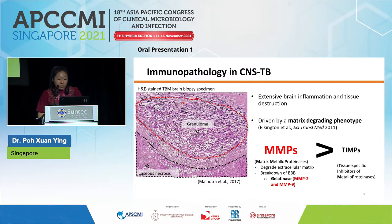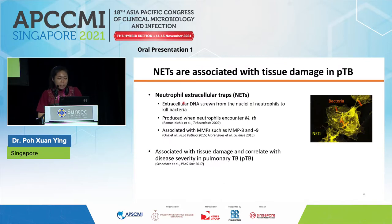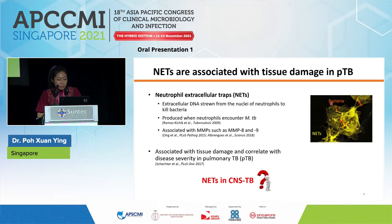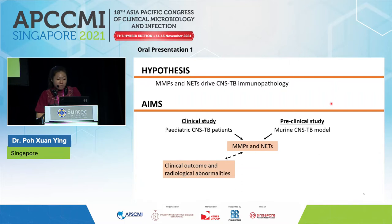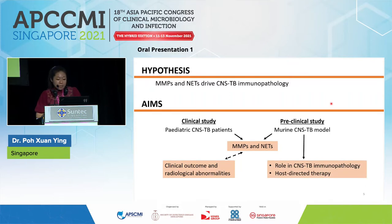The breakdown of the blood-brain barrier is driven by the gelatinases MMP2 and MMP9. NETs are extracellular DNA structures released from neutrophils to kill bacteria; studies show NETs are produced when neutrophils encounter MTB and are associated with MMPs 8 and 9. In active pulmonary TB patients, NETs are associated with tissue damage and disease severity. However, the importance of NETs in CNS TB remains unknown. My hypothesis is that MMPs and NETs drive CNS TB immunopathology. The aims are to investigate MMP and NET expression in CNS TB patients and a murine model, evaluate their association with disease severity, and assess their potential for host-directed therapy.